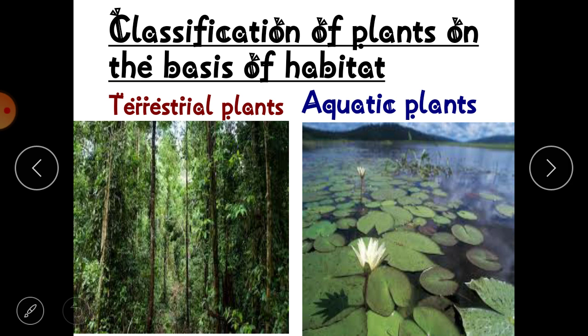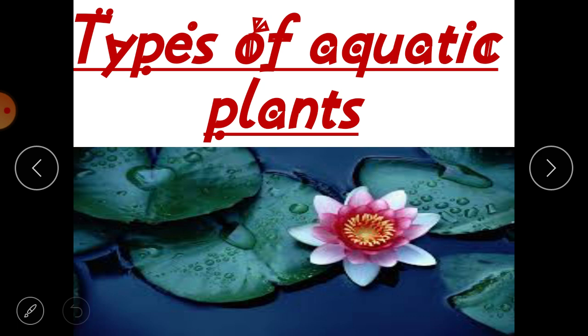In the previous video we discussed about habitat and adaptation, and we classified plants on the basis of habitat. We observed that plants are broadly classified into two categories: terrestrial plants and aquatic plants. Plants that grow on land are known as terrestrial plants, and plants that grow in water are known as aquatic plants. In today's video we are going to discuss types of aquatic plants.